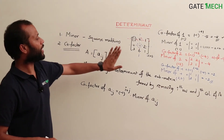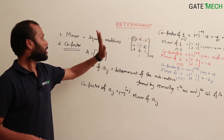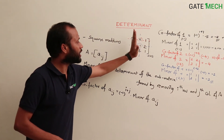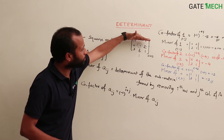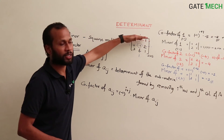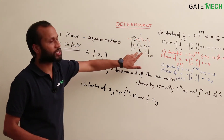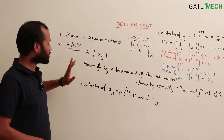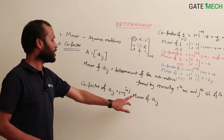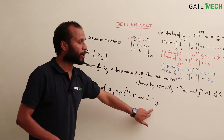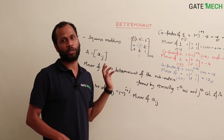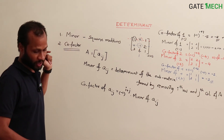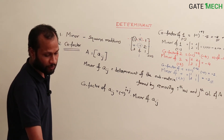So to summarize: the minor of an element is found by deleting the corresponding row and column from the matrix and finding the determinant of the sub-matrix. The cofactor is (-1)^(i+j) times the minor of that element. These two concepts are useful in finding determinants of matrices.